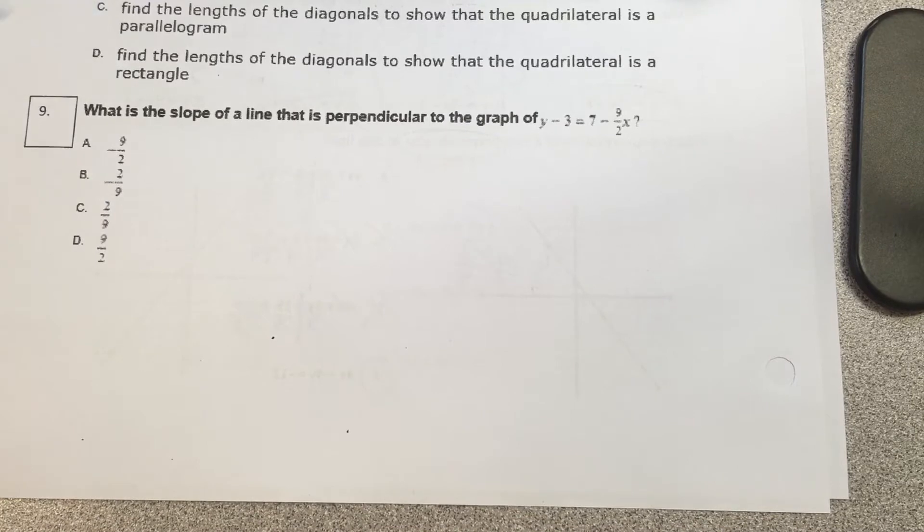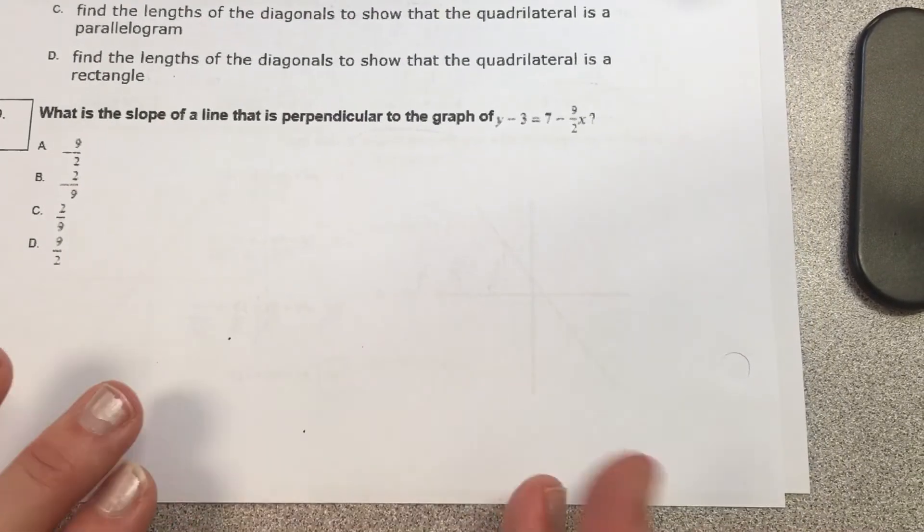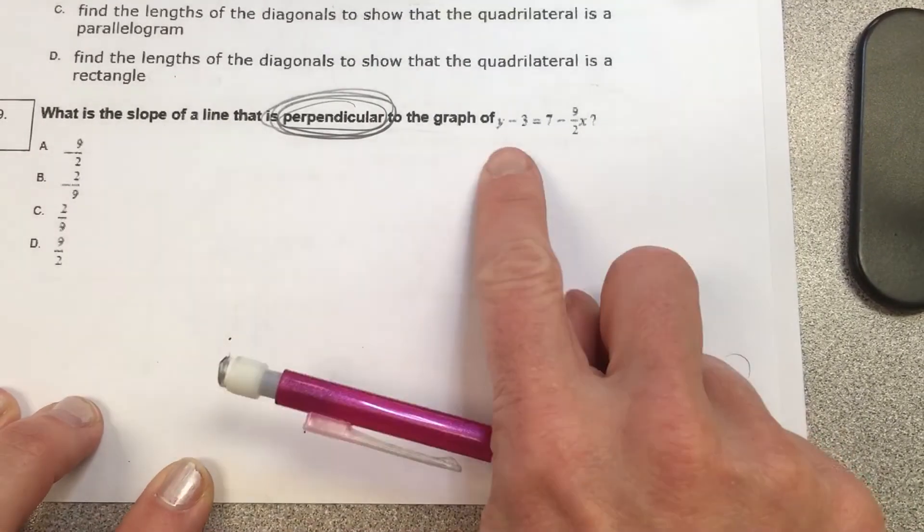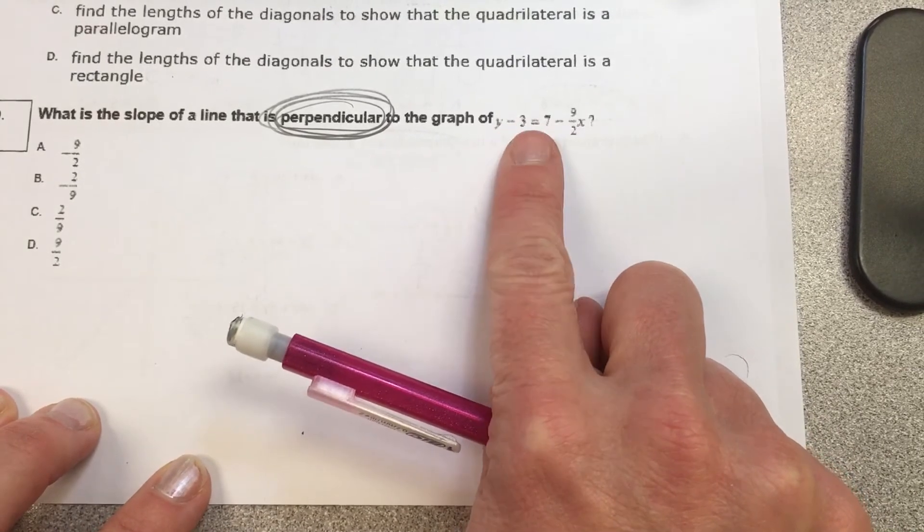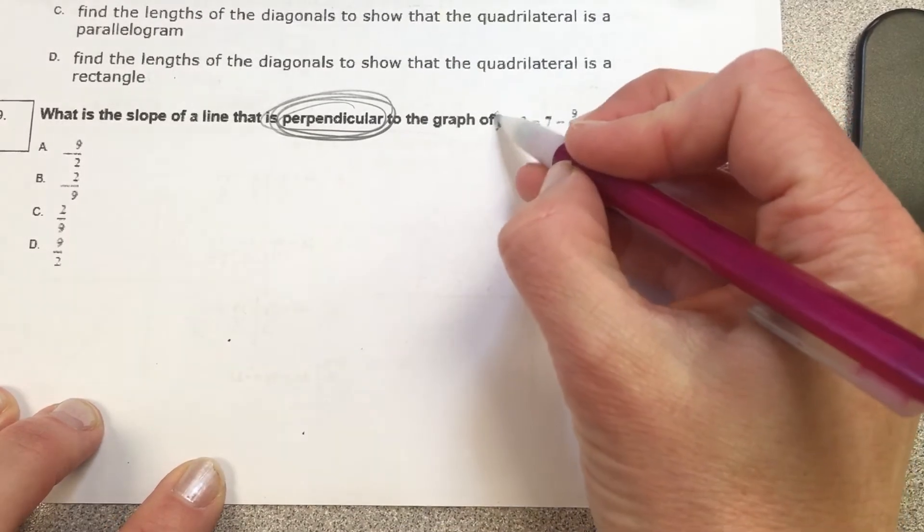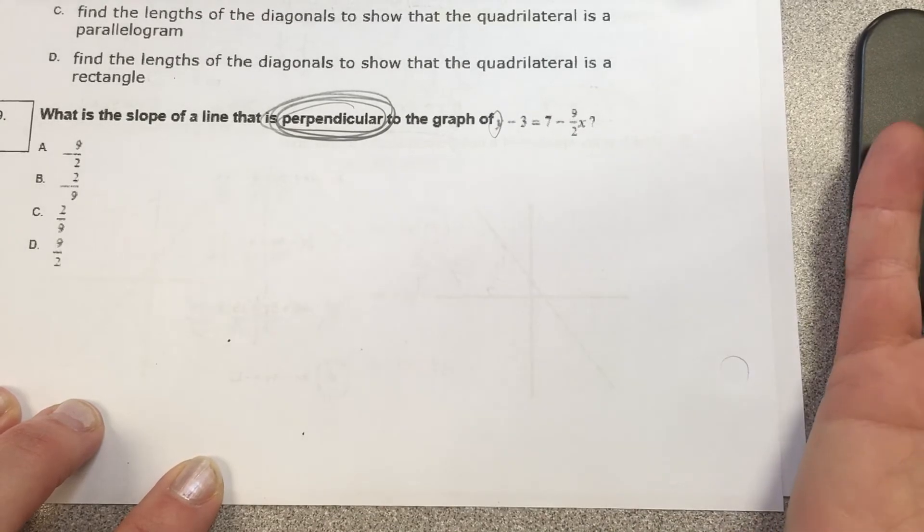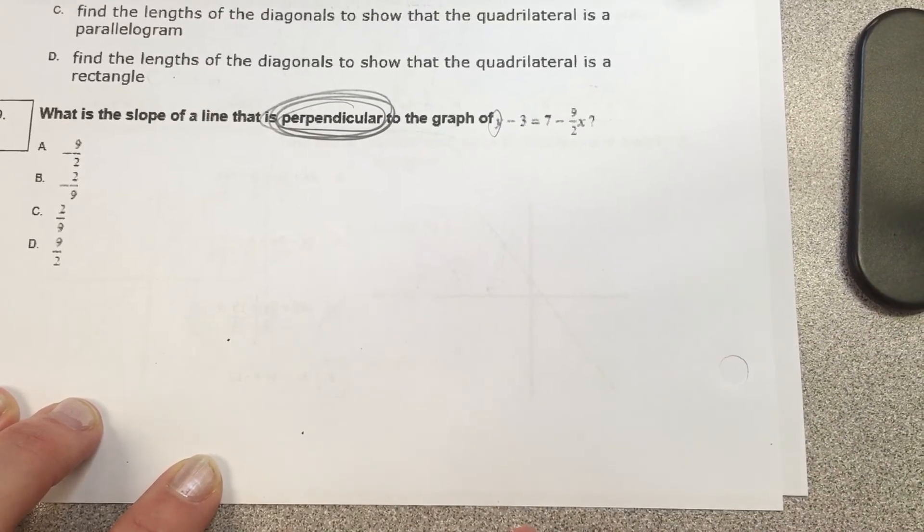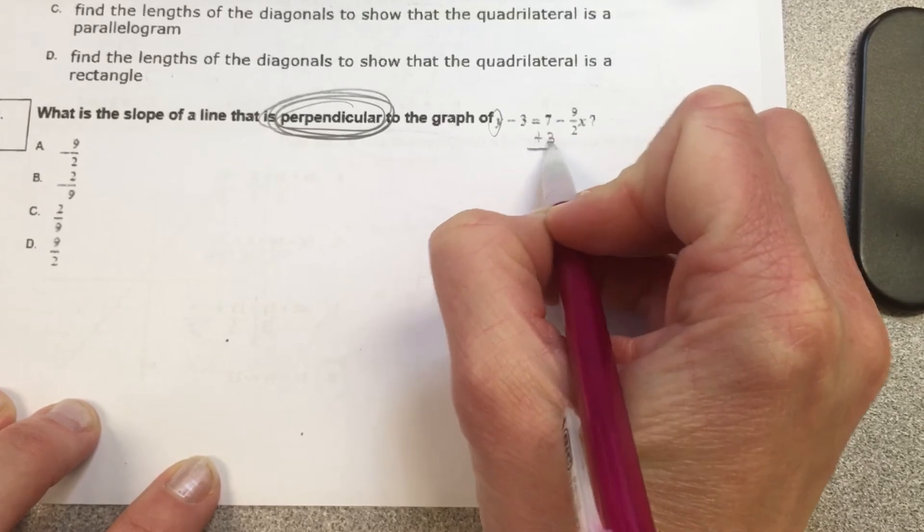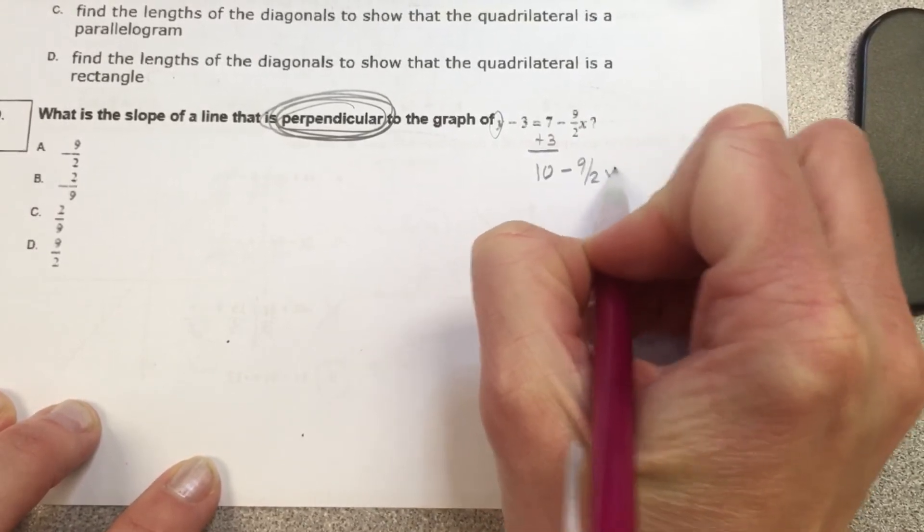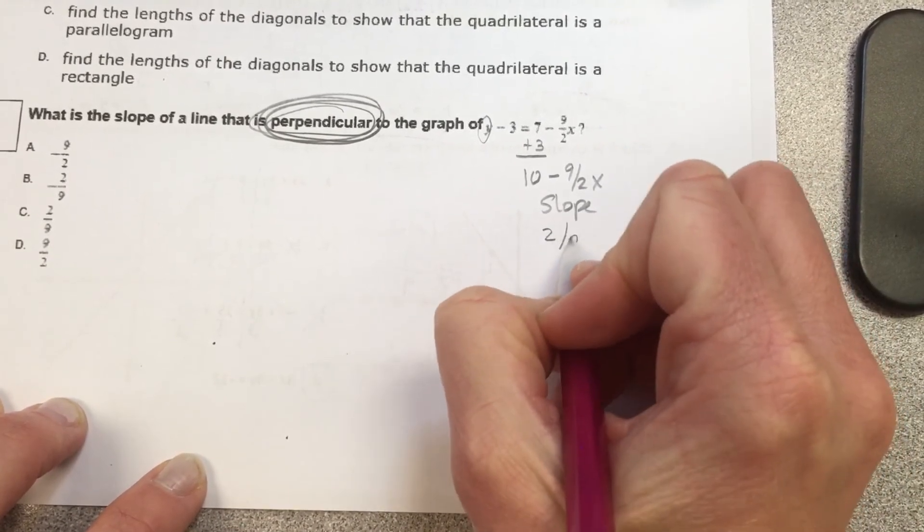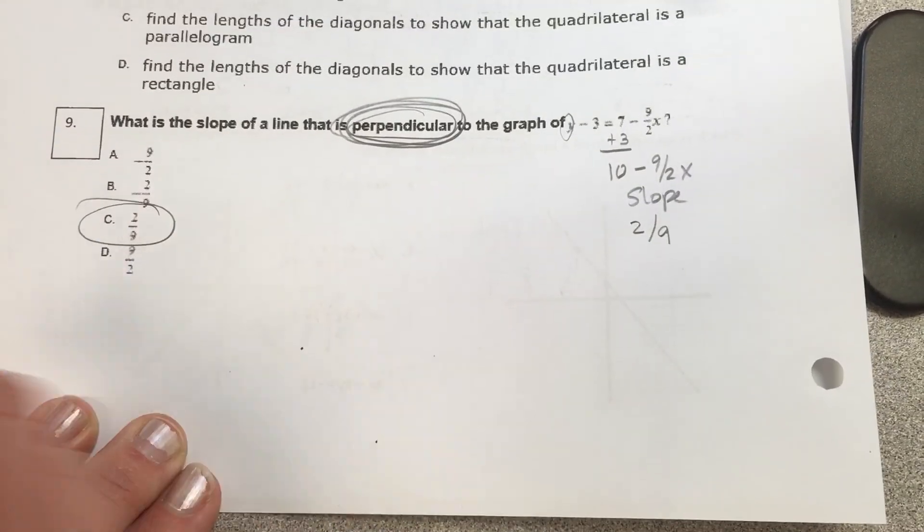Last one, number 9. What is the slope of a line that's perpendicular to the graph of y minus 3 equals 7 minus 9/2x? I've never given you one exactly like this. We know it needs to be perpendicular. What is the slope of this one? Negative 9 over 2x. Just be careful - is y by itself? How would you get y by itself? You would add 3 to 7, so 7 plus 3 is 10. So the slope is negative 9 over 2. What would be perpendicular to that? 2 over 9, which is answer C.